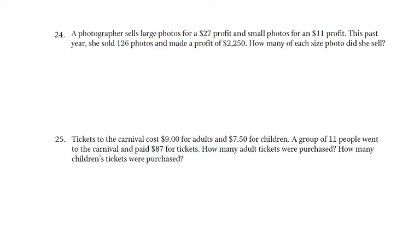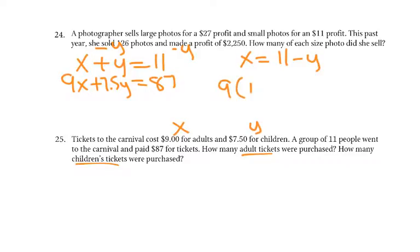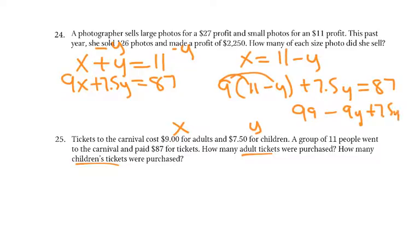Now the last one. Tickets to the carnival cost $9 for adults and $7.50 for children. A group of 11 people went to the carnival and paid $87 for tickets. How many adults, how many children? Let's call adults x and children y. So x plus y equals 11, and 9x plus 7.5y equals 87. I'd use substitution: x equals 11 minus y. So I'd get 9 times (11 minus y) plus 7.5y equals 87, which gives 99 minus 9y plus 7.5y equals 87.